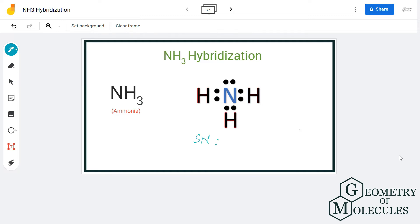To check the hybridization, we will look at the steric number. If you calculate the steric number, we use this formula in which we calculate the number by looking at the number of lone pairs on the atom plus the number of atoms attached to it.